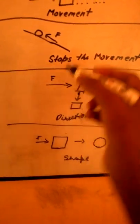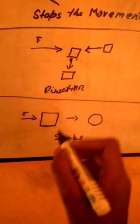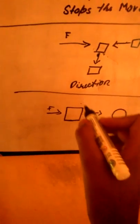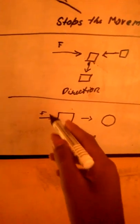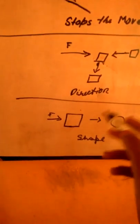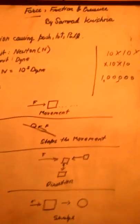...we just apply force and change the direction, that is known as direction change. In this, we can change... it is a square and we are applying a force, and the force is converting the square into a circle—that is known as shape change. Now we have studied today about the force. So thank you and have a nice day.